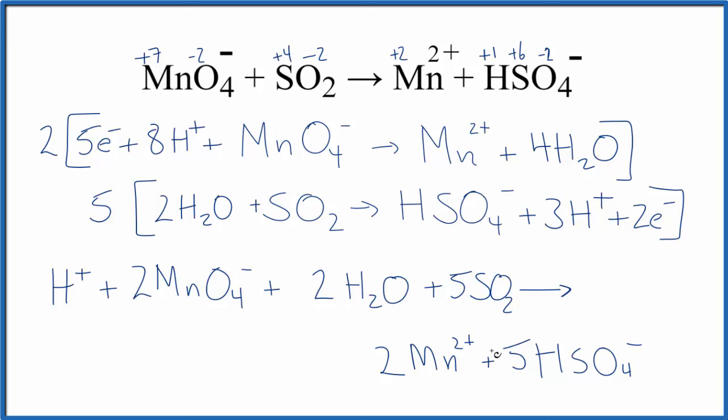So here we are with our final balanced redox reaction. You'll note that charge is the same. I have one plus and then two times one minus, so that's one minus. So I have a negative one charge here. Here I have four. Two times two plus is four plus. Five times the one minus, so I have a one minus here.